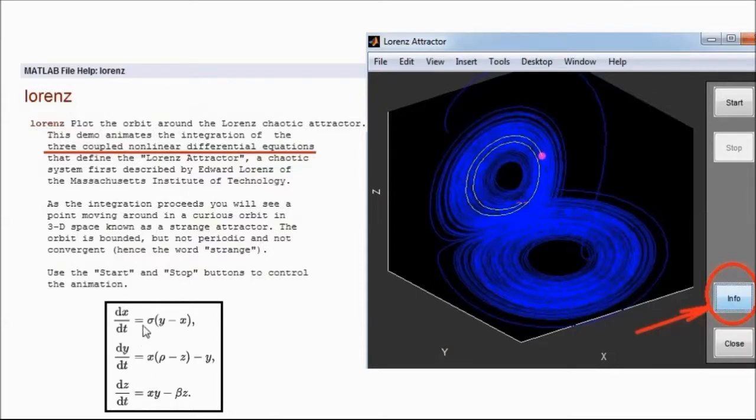So the equations are right here. They are described in terms of three variables x, y, and z. They are first order systems. They are coupled systems because each equation has the other variables. First equation has y and x, second equation has x and z, and so on.